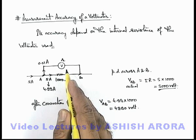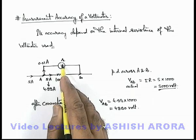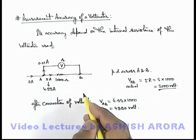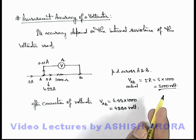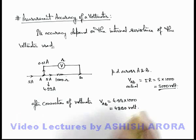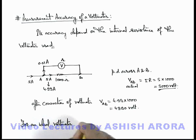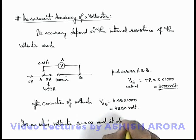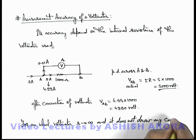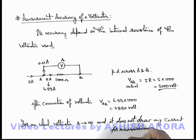Hence in the practical world, deflection type meters always have relatively less accuracy — it can never be 100 percent. So for an ideal voltmeter, its resistance should tend to infinity and it should not draw any current for measurement, but practically such voltmeters can never be realized.